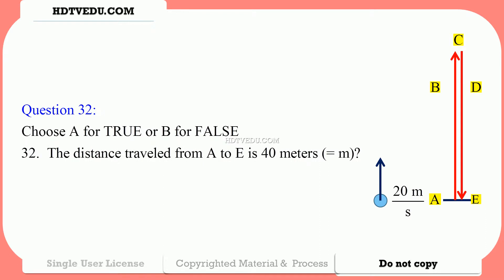The distance traveled from A to E is 40 meters. What is the distance traveled from A to E? It is A to B, plus B to C, plus C to D, plus D to E.